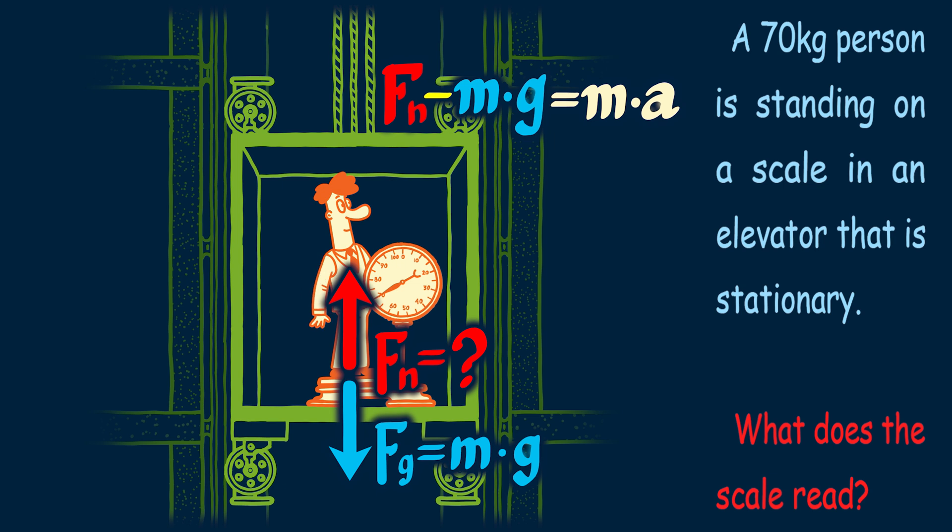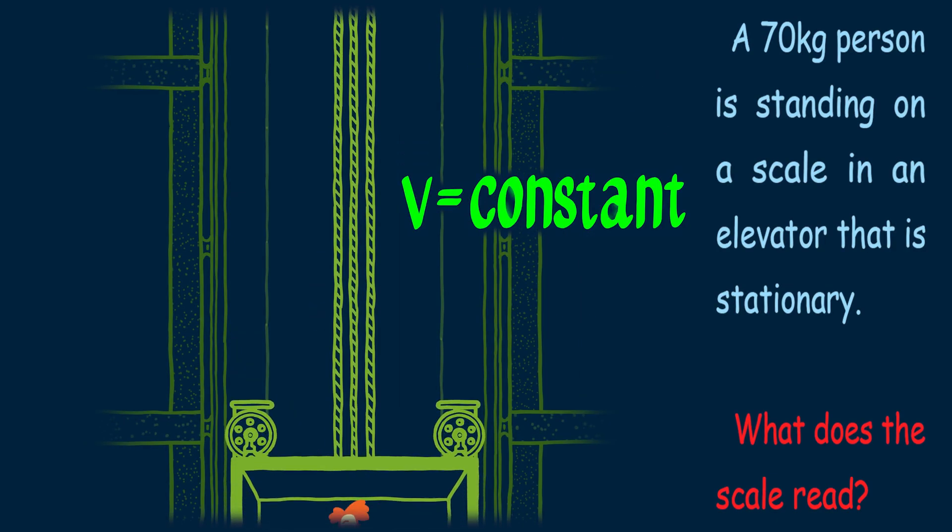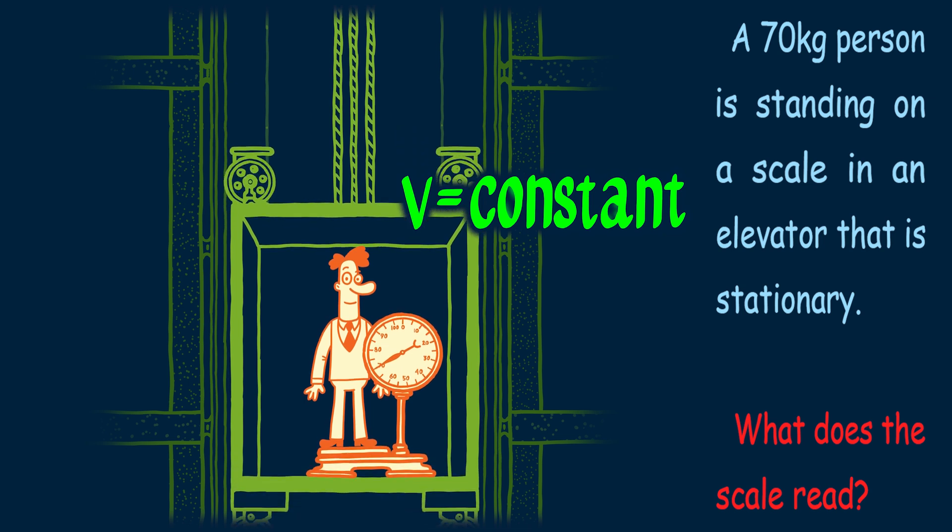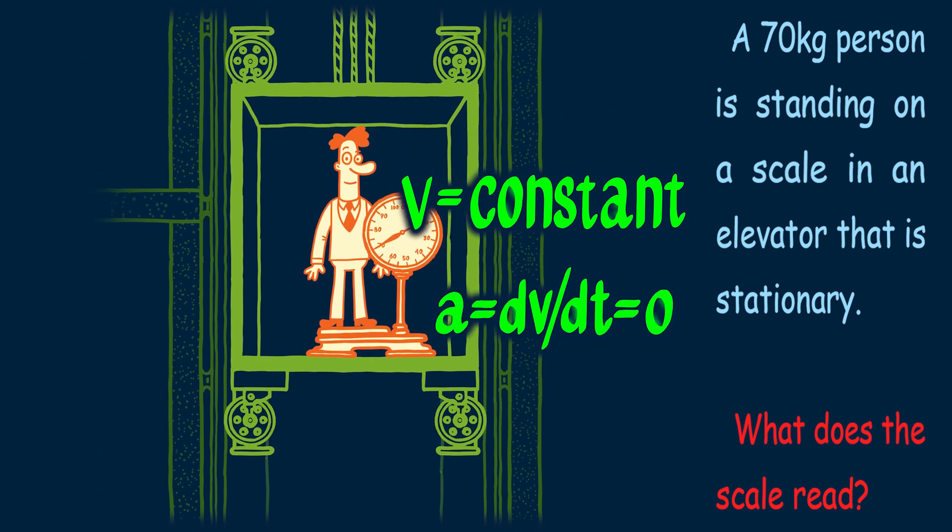Now since the elevator is at rest, this means that the acceleration is zero, and therefore the normal force is equal to the force of gravity, which is 686 newtons. Note this would still be the case if the elevator were moving at a constant velocity, because then the acceleration would still be zero.